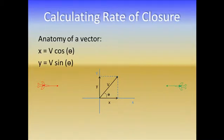If you're interested, we can see the formulas for each of these components. For X, we multiply V — in this case our speed, or the magnitude of our vector — so the speed times the cosine of the angle. For the Y component, we take the speed times the sine of the angle.